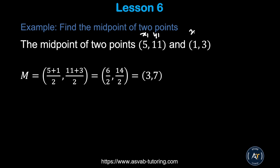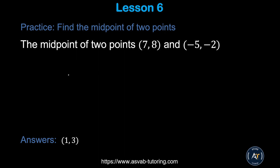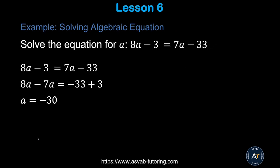Let's apply the midpoint formula to a real problem. Label the coordinates x1, y1, x2, y2 and plug into (x1 + x2)/2 and (y1 + y2)/2. Simplifying gives x = 3 and y = 7. Now try the practice problem using the same formula and make sure you get the correct answer.